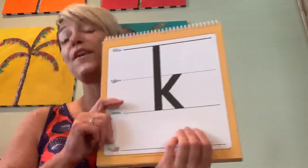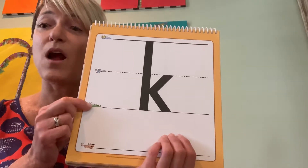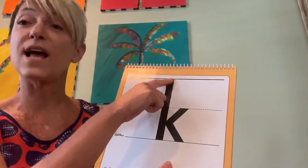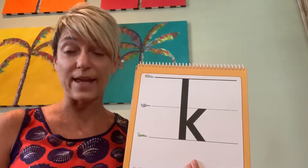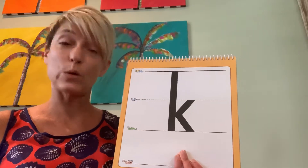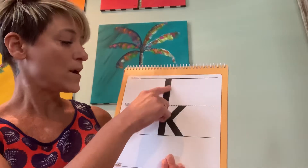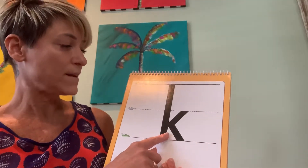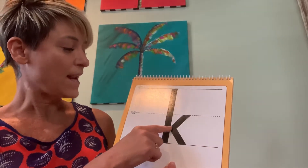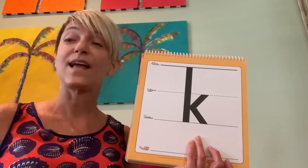Here is our letter K. We have our skyline, our plain line, our grass line, and our worm line. So I'm going to start at the skyline - this is the lowercase letter K. We do the lowercase letters first because we write and read those mostly. K. Go down to the grass line, go to the plain line, in and out to the grass line. K - kite - k. It's a tricky one.